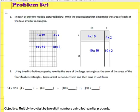Now part B says, use the distributive property to rewrite the area of the large rectangle as the sum of the areas of the four smaller rectangles. Express first in number form then read it in unit form. Okay. So I have 14 times 12. That's what I'm beginning with.